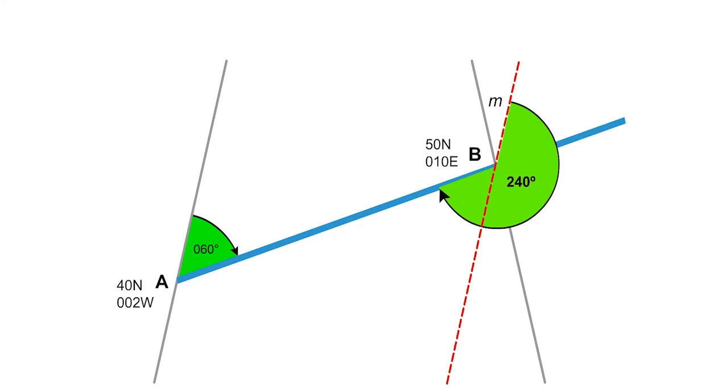However, the parallel construction line is not local true north. That is defined by the meridian at B and it differs from the parallel line by the amount of convergency, which, as we know, is 8.5 degrees in this case. So the initial great circle track from B to A is also 248.5 by this approach.